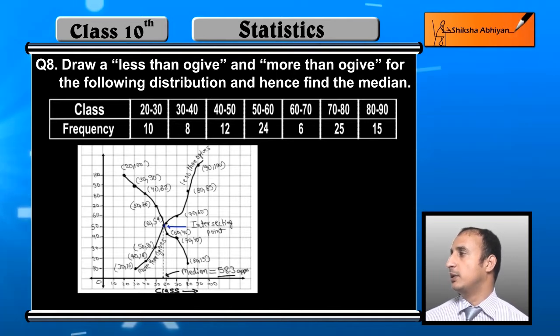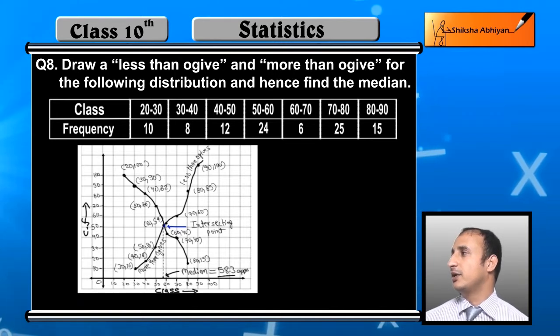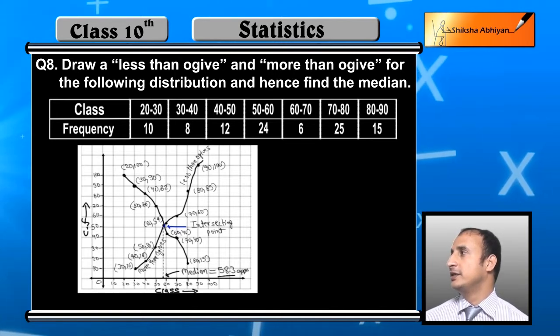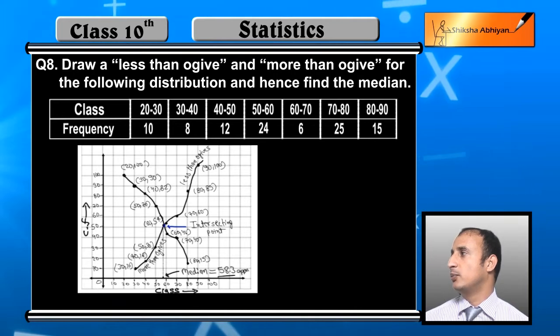Now students, this is more than ogive, this is class, and this is cumulative frequency. Now I have plotted the graph. This is the intersecting point. This is the less than ogive, this is more than ogive. Here is the correct graph: this curve is less than ogive and this curve is more than ogive.